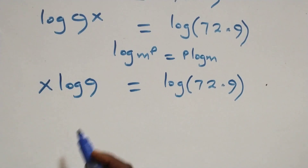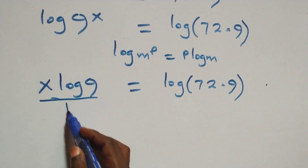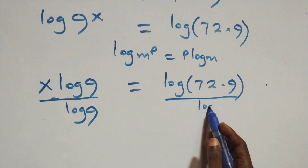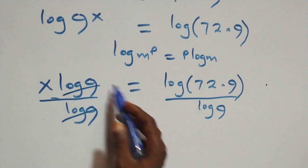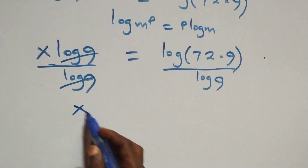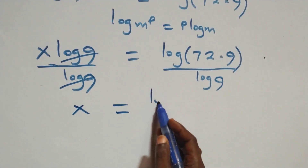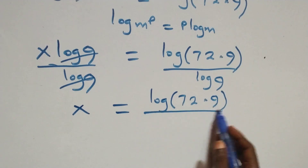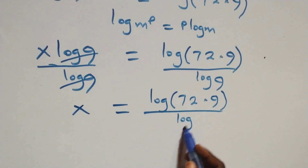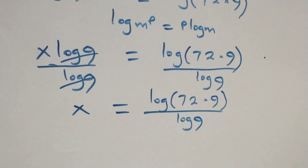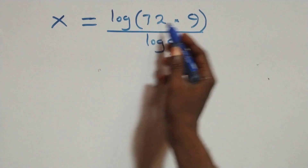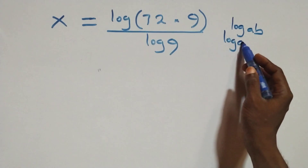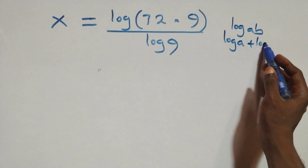Then we divide both sides by log 9. Log 9 cancels each other, and we separate using the law of logarithms: when we have log(a times b), this is the same thing as log a plus log b.